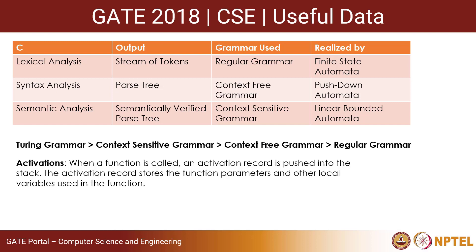One more concept: activation records. When a function is called, an activation record is created and pushed into the stack. The activation record stores the function parameters and other local variables used in the function. It also stores additional information about the function call, like the return address.